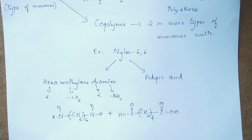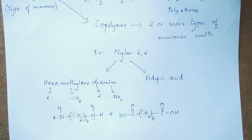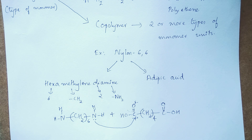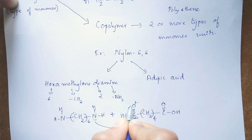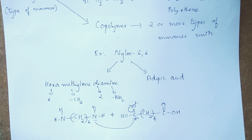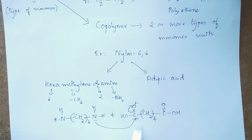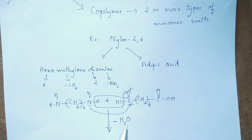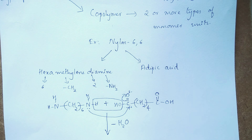When hexamethylene diamine reacts with adipic acid, the lone pair of electrons on the nitrogen of the amino group attacks the partially positive carbonyl carbon, and some electronic rearrangements take place. The electrons of the double bond shift to oxygen, giving C–O⁻. After some time the negative charge on oxygen comes back forming the double bond again, but during that time the C–OH bond breaks. The hydroxide ion comes out and combines with the hydrogen of the amino group. When OH⁻ combines with H⁺, a molecule of water is formed and eliminated from the system, and a new bond is formed between nitrogen and carbon.